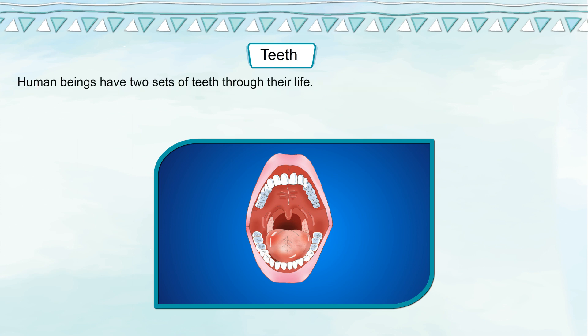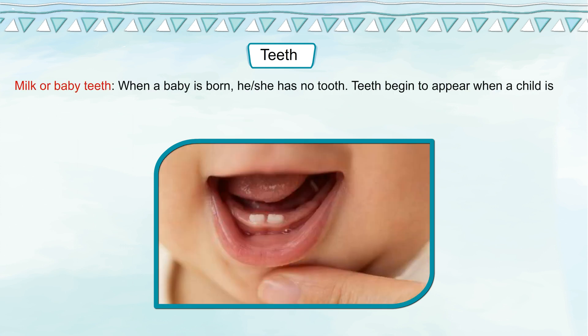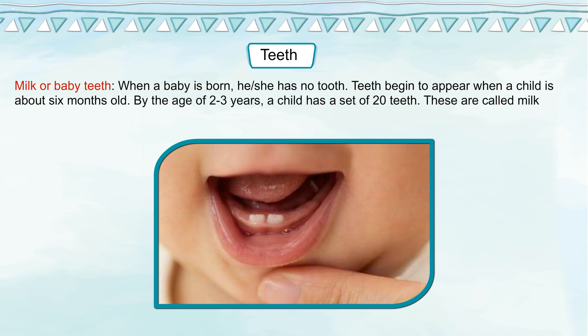Human beings have two sets of teeth through their life. The first set is milk or baby teeth. When a baby is born, he or she has no teeth. Teeth begin to appear when a child is about 6 months old. By the age of 2 to 3 years, a child has a set of 20 teeth, called milk teeth.